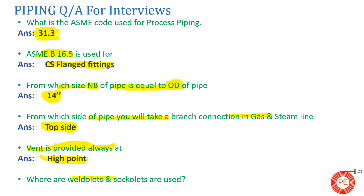The next question is: what are weldolets and socolets, and where are they used? Weldolets and socolets are used for butt weld and socket weld connections respectively, and they are generally used for small pipe sizes.